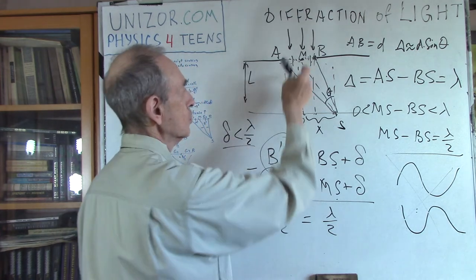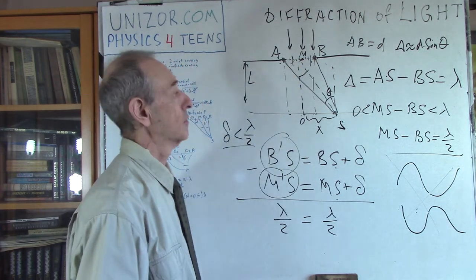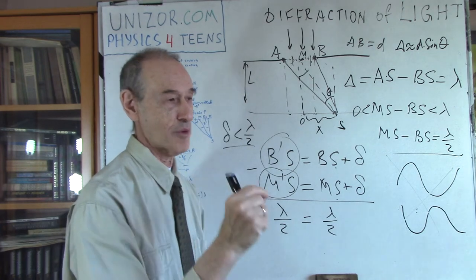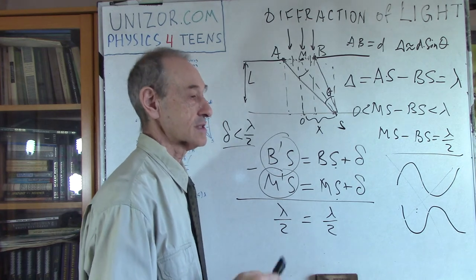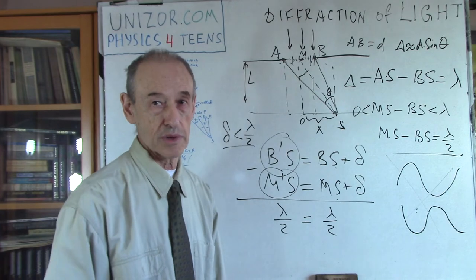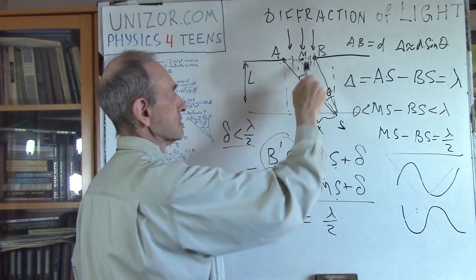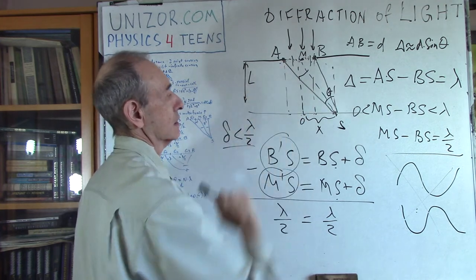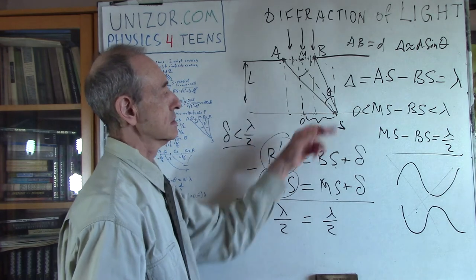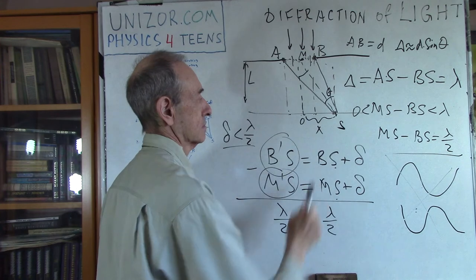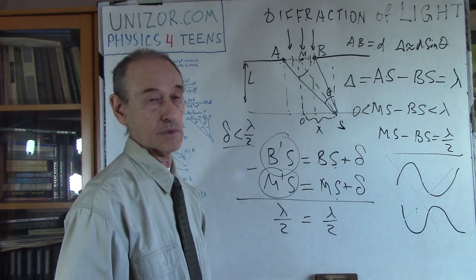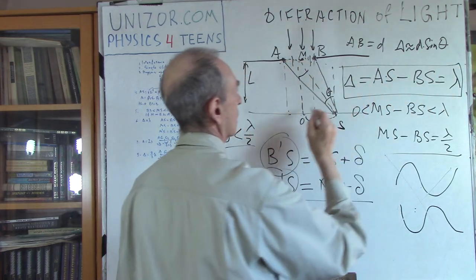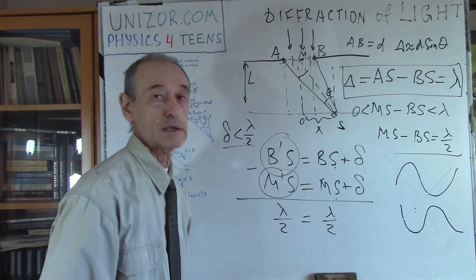This pairing works whether we think of it as a continuum of infinite points or a physical approximation. For every point that is a source of secondary light according to Huygens' principle, we can find another point that cancels it. This means point S would be completely dark — all the rays cancel each other. So if the difference between the longest and shortest path is lambda, the result is a dark spot.